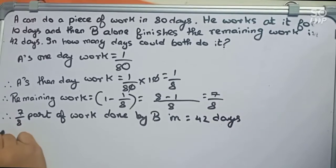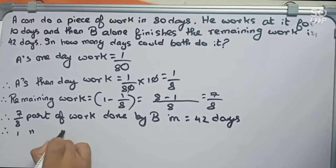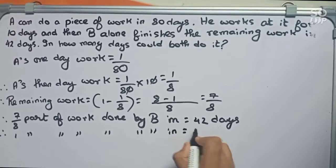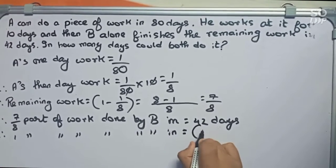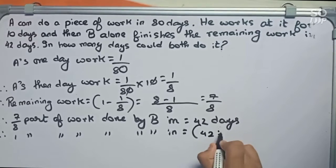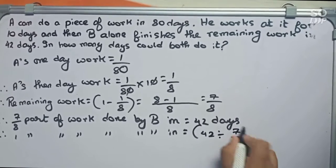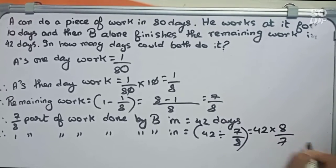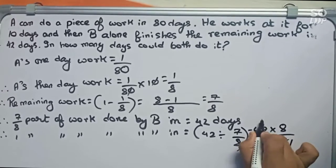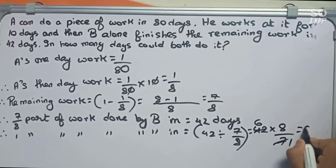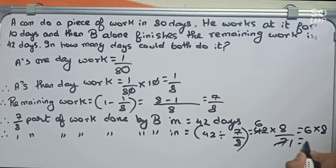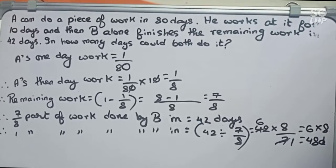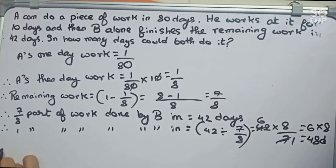Now therefore one part of the work done by B = 42 ÷ (7/8) = 42 × 8/7. Cancel 7 and 42: 6 × 8 = 48 days. So this is one part of work done by B.